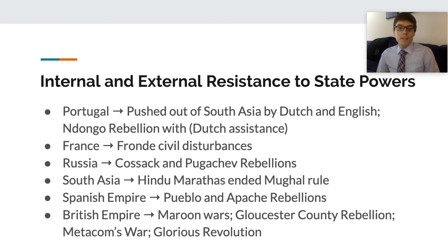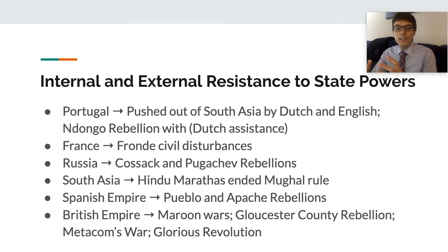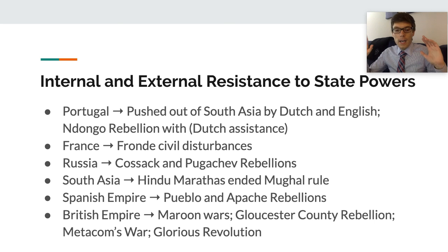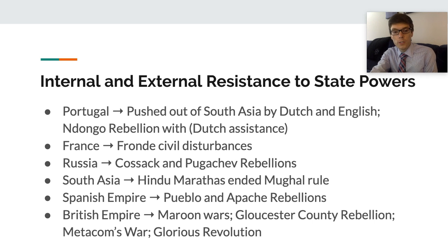Pugachev falsely claimed to be Catherine's murdered husband, Peter III. He gathered a following of discontented peasants, people from different ethnic groups, and fellow Cossacks, and at one point they controlled the territory between the Volga River and the Urals. Within a year, the Russian army had easily put down the rebellion, captured Pugachev, and executed him. Unfortunately, the Pugachev rebellion caused Catherine to increase her oppression of the peasants in return for the support of nobles to help prevent future revolts.